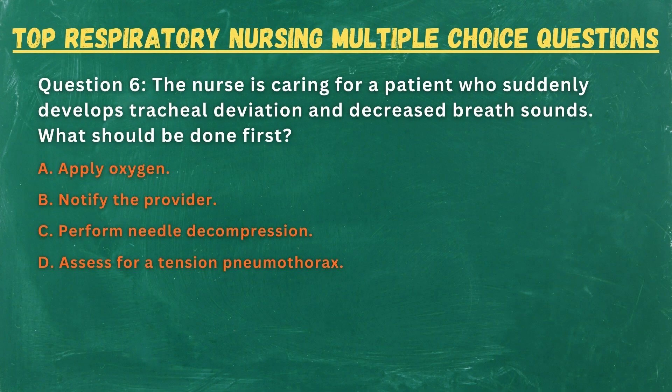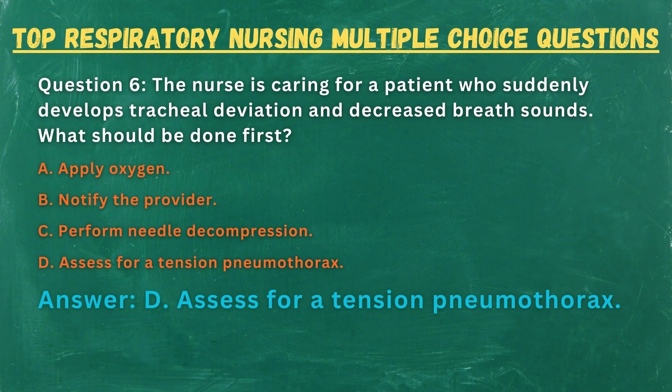Question 6. The nurse is caring for a patient who suddenly develops tracheal deviation and decreased breath sounds. What should be done first? A. Apply oxygen. B. Notify the provider. C. Perform needle decompression. D. Assess for tension pneumothorax. Answer: D. Assess for tension pneumothorax.